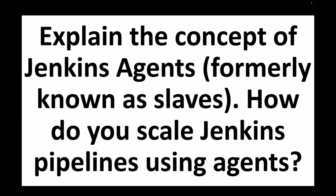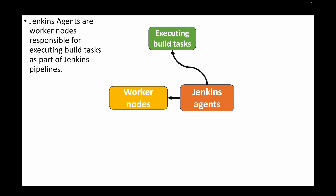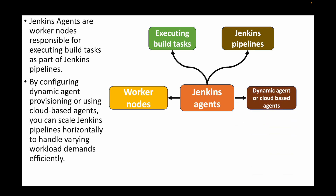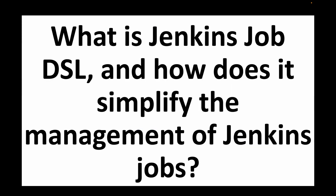The next question is: explain the concept of Jenkins agents (formerly known as slaves) and how you scale Jenkins pipelines using agents. Jenkins agents are worker nodes — remote machines responsible for executing build tasks as part of the Jenkins pipeline. If you want to build on one machine, test on another, and deploy on another, you use these remote machines. We can configure dynamic agent provisioning or cloud-based agents like EC2 instances to scale horizontally and distribute the load across multiple Jenkins agents.